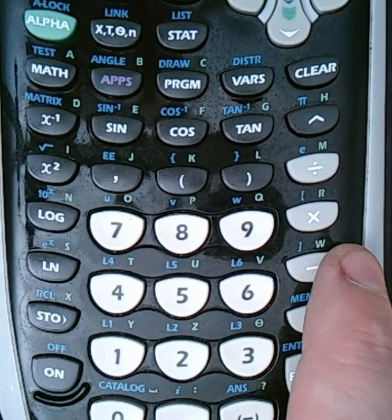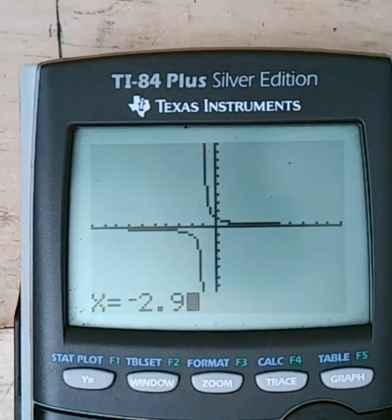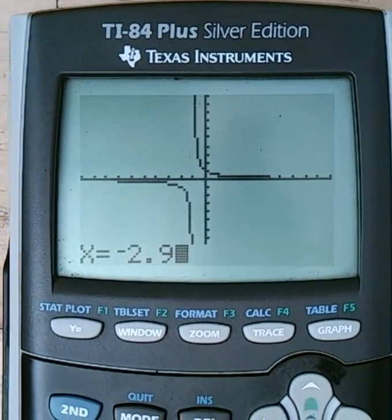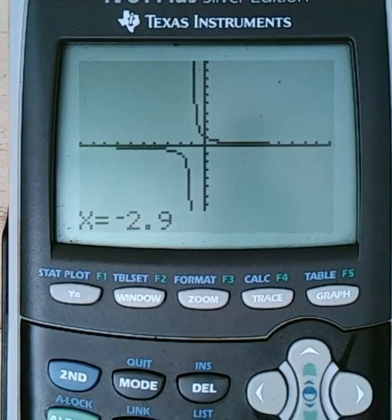This is the subtraction key. This is the negative key here. Make sure you're using the negative key. So with that said, here we go. We type in x equals negative 2.9. Hit enter.